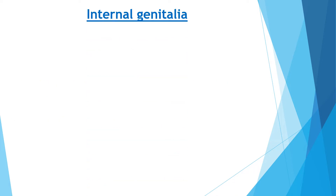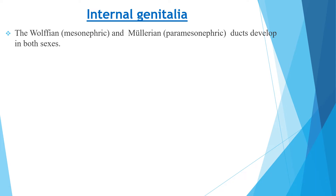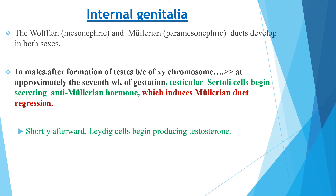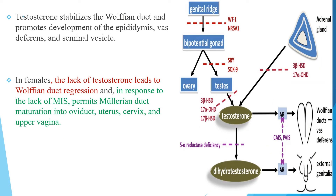Regarding development of internal genitalia, the Wolffian (mesonephric) and Müllerian (paramesonephric) ducts develop in both sexes. In males, after formation of the testes by presence of the XY chromosome at approximately the seventh week of gestation, testicular Sertoli cells begin producing anti-Müllerian hormone, which induces Müllerian duct regression. Shortly afterward, Leydig cells from the testes begin producing testosterone, which stabilizes the Wolffian duct and promotes development of the epididymis, vas deferens, and seminal vesicles.